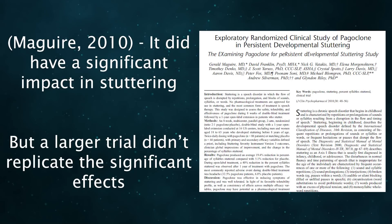Development of pagoclone for stuttering was then abandoned, despite all of the hope that surrounded it for a few years.